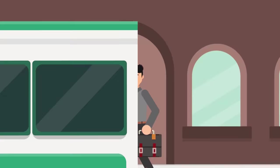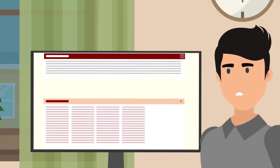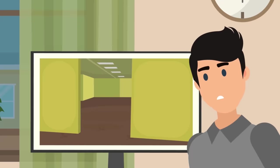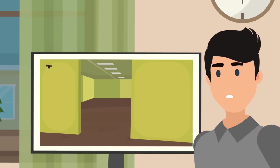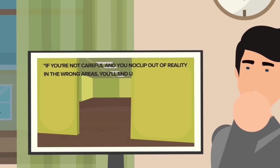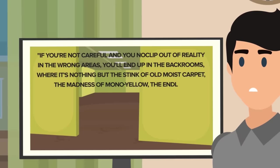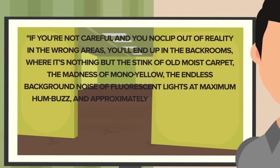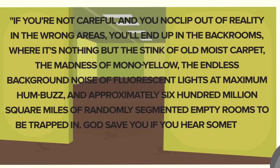That's when you first hear about the backrooms. It starts when you see a 4chan post, widely circulated around certain parts of the internet, an enigmatic picture of a strange, featureless office building with sickly yellow wallpaper, and text reading: If you're not careful and you no-clip out of reality in the wrong areas, you'll end up in the backrooms, where it's nothing but the stink of old moist carpet, the madness of mono-yellow, the endless background noise of fluorescent lights at maximum hum-buzz, and approximately 600 million square miles of randomly segmented empty rooms to be trapped in. God save you if you hear something wandering around nearby, because it sure as hell has heard you.